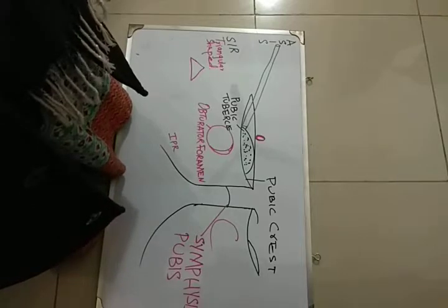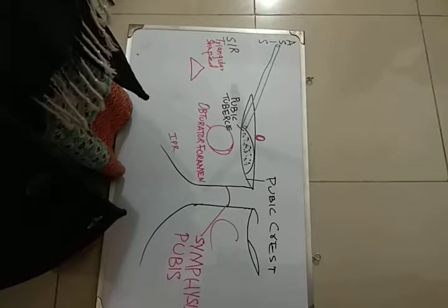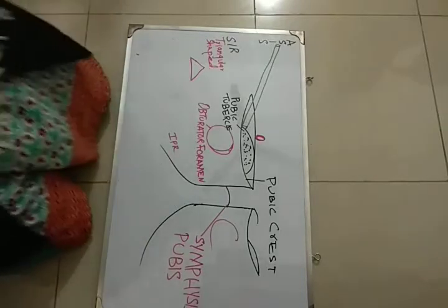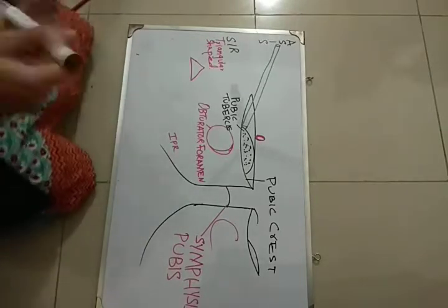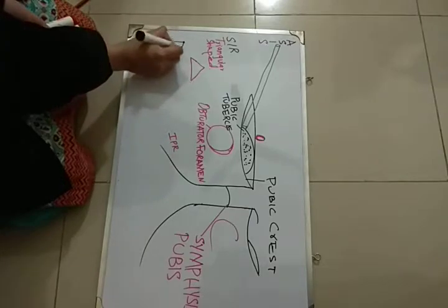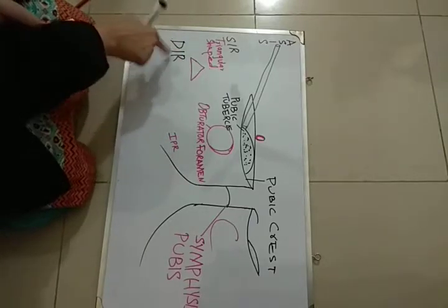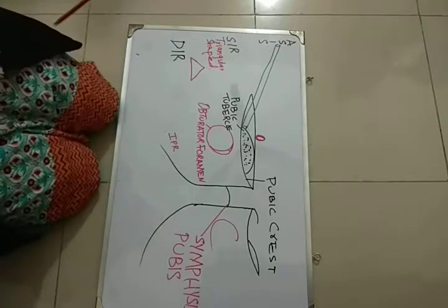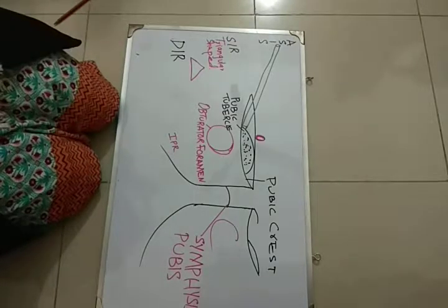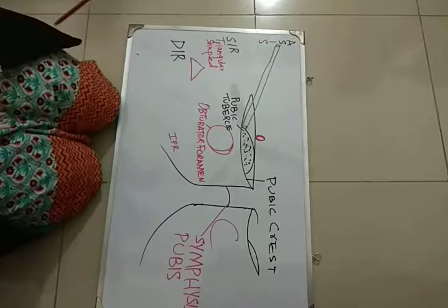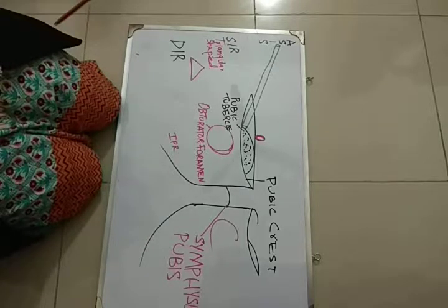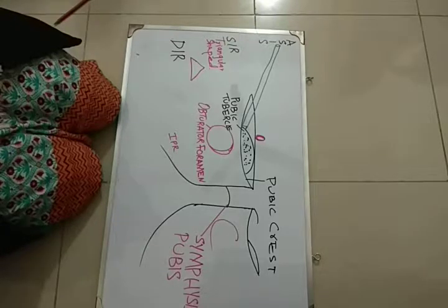The superficial inguinal ring allows the attachment of the external spermatic fascia. Now we will move towards the deep inguinal ring. The deep inguinal ring is actually the opening in the fascia transversalis. Fascia transversalis is the fascia which lines the transversus abdominis muscle, and this opening in the fascia transversalis is known as the deep inguinal ring.